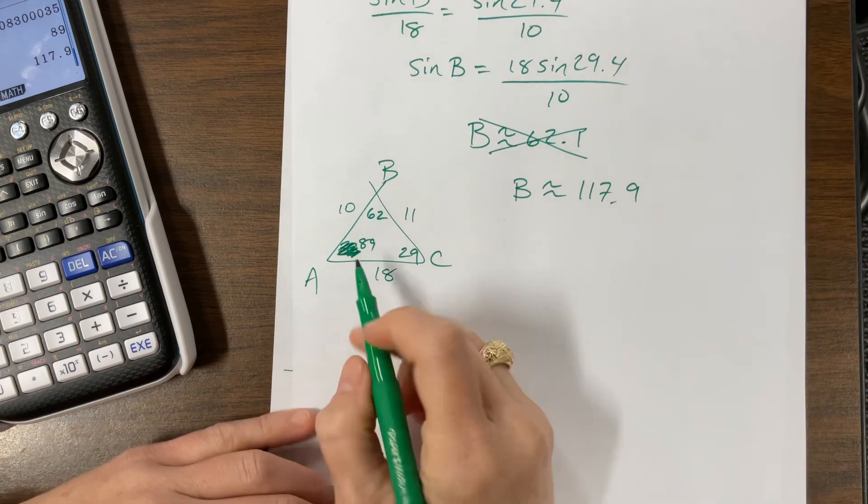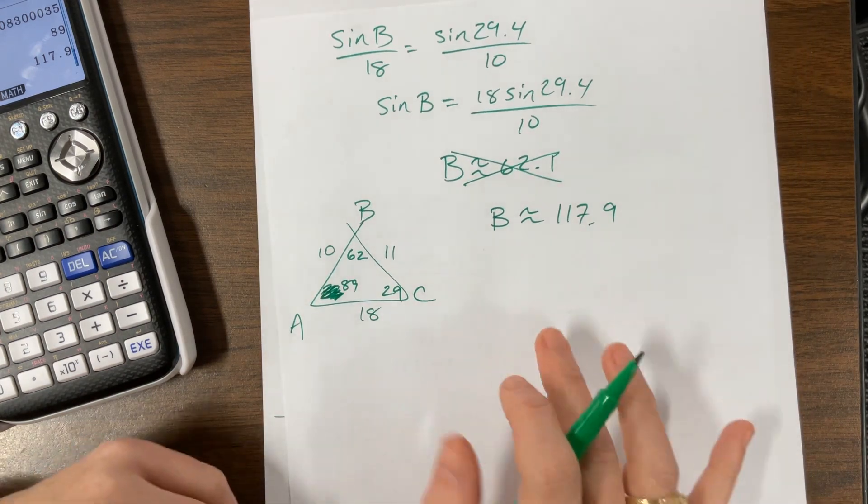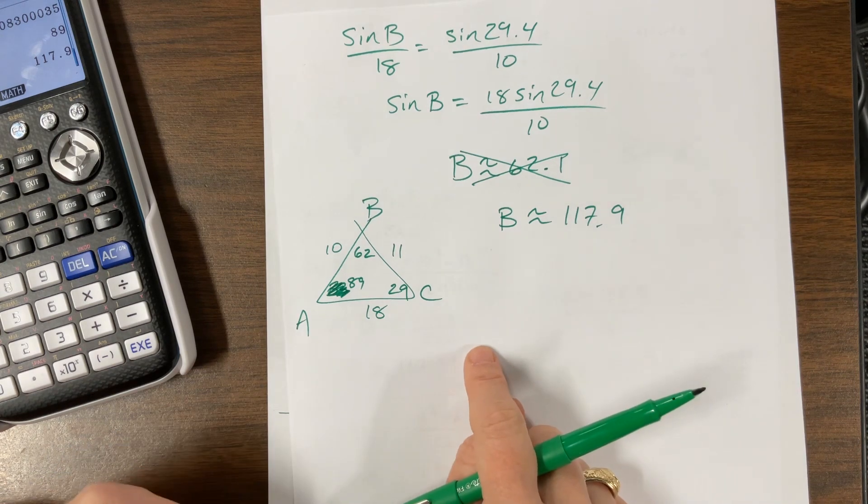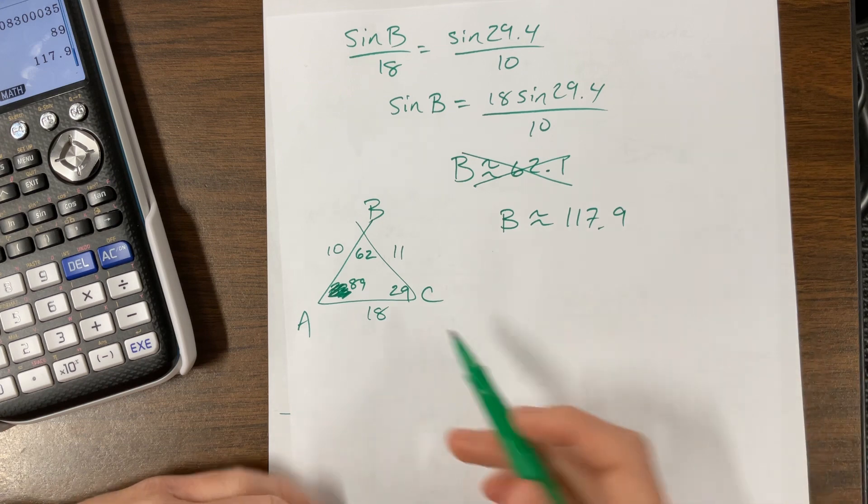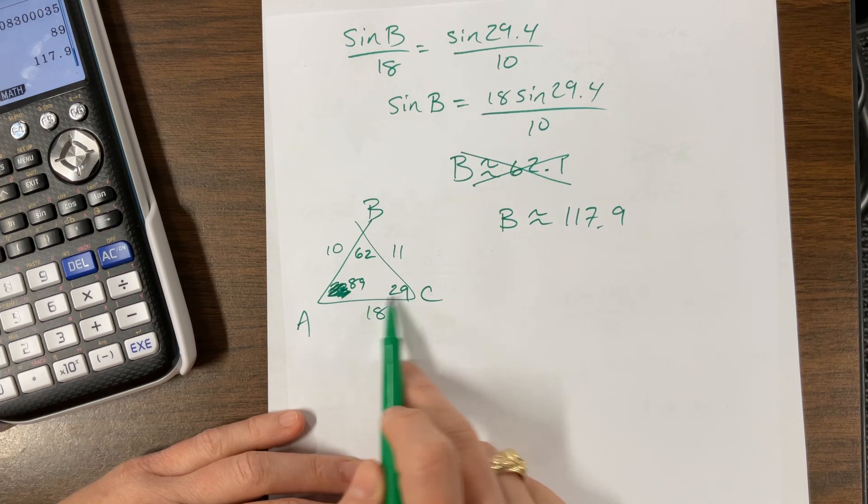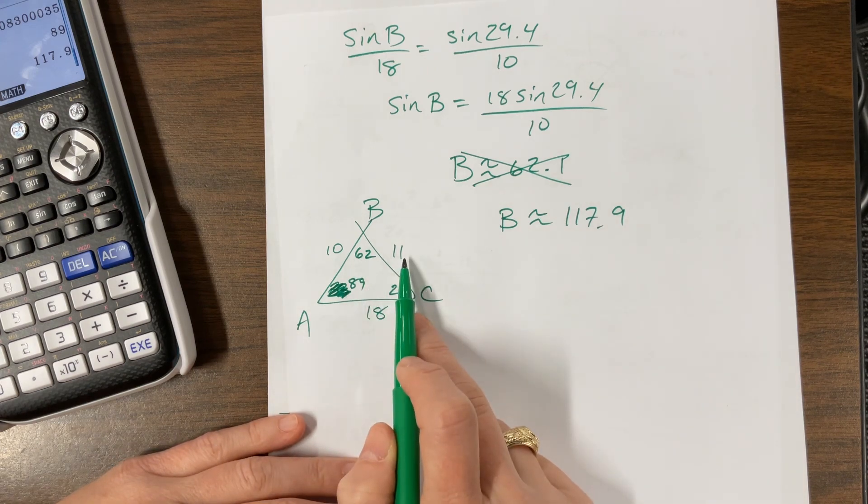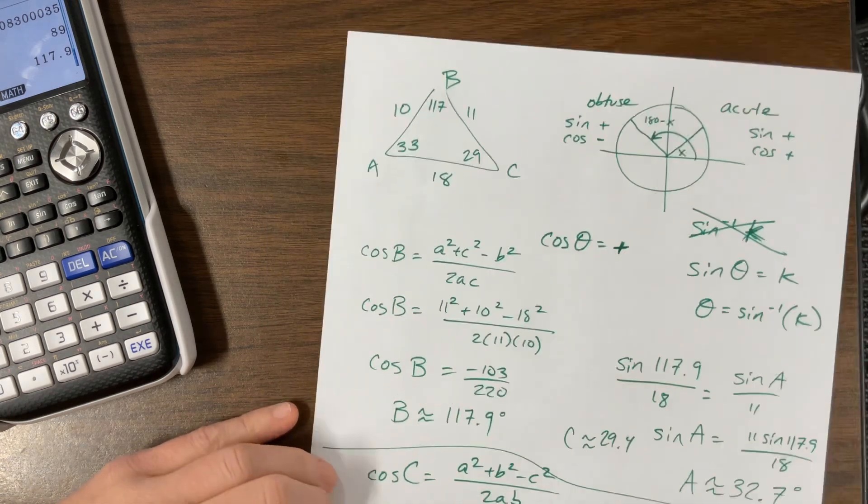So what you might do, the way that I might check all of these problems when you're doing law of sine, law of cosine, is always verify at the end, is the largest angle across from the longest side. Because if we go with this, this 89 degree is not, is the biggest angle in here, but it's not across from the longest side. So we needed to use the supplement to B back here.